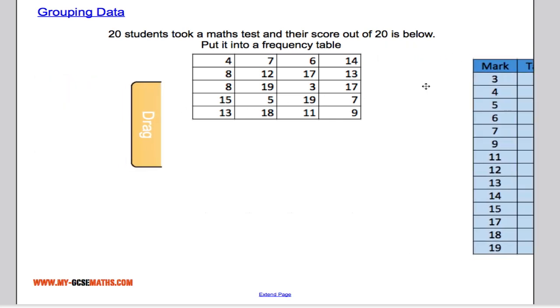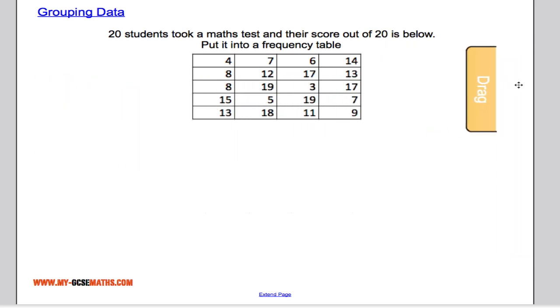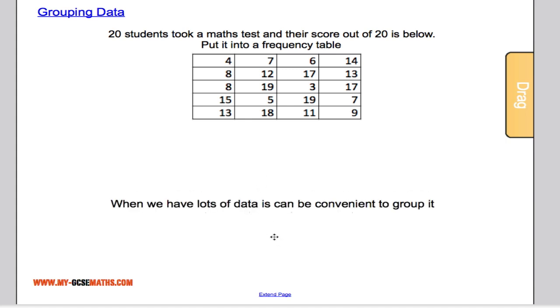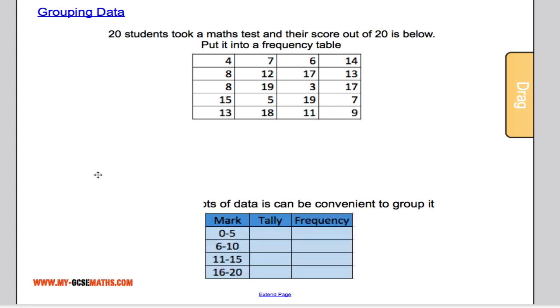So what I'm going to do is group the data instead. If I group the data because I have lots of it, it's going to be far more convenient. And our table will look something like this. Now it's much easier to tally up the data. So anyone between 0 and 5 marks I'm going to tally up here. So we got 1, 2, 3, so tally of 3, frequency of 3.